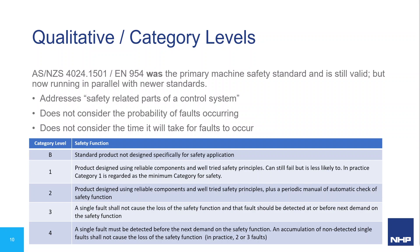The qualitative standard is based on safety categories — there are five of them, between Category B and Category 4. The standard is AS/NZS 4024 Part 1501, which until the last 10 years or so was the primary machine safety standard in Australia. It was recently reviewed and reconfirmed, meaning it's still perfectly valid. What makes this qualitative is that it's based around the behaviour of a safety control system and how it responds to faults — the quality of the system.